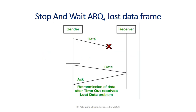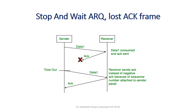For a lost data frame, if the sender has sent the data frame but it has not been received by the receiver, it will be automatically re-sent by the sender after a fixed time, and the receiver will then send an acknowledgement for that particular packet. If a lost acknowledgement frame occurs, the receiver sent an acknowledgement but it was lost in between; after a particular timeout, the sender will re-send the same data frame again.